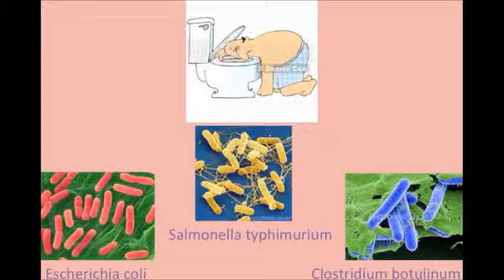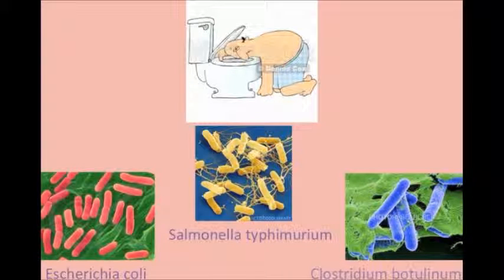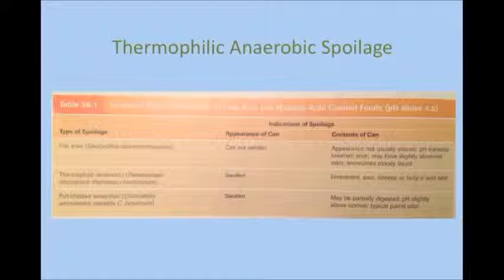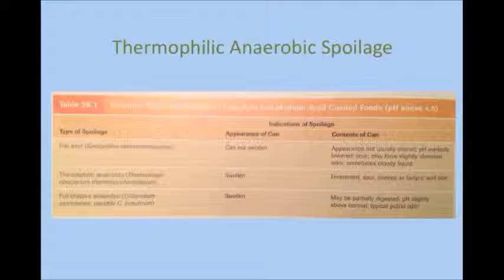Clostridium botulinum is a bacteria that can find its way into spoiled canned foods. If ingested, this bacteria can cause botulism, which is an extremely harmful disease that can cause weakness, double vision, and muscle paralysis. A type of spoilage is thermophilic anaerobic spoilage, which occurs if canned foods are incubated at high temperatures. There is a chance for the thermophilic bacteria that survive to germinate and cause more trouble, making this a common cause of spoilage in low-acid canned foods at the commercial level.